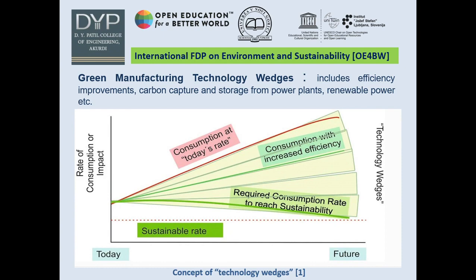To carry out ultra-precision cutting and micro-machining processes, we must continue with green manufacturing technology wedges. These include efficiency improvements, carbon capture and storage from power plants, and renewable power. As seen in the technology wedges concept figure, as we adopt new technology in manufacturing, consumption rate increases day by day in future. However, at the same time, consumption with increased efficiency is lowered — meaning efficiency increases while energy consumption decreases. That is the impact of green manufacturing technology wedges.